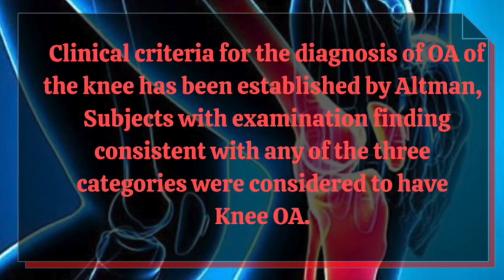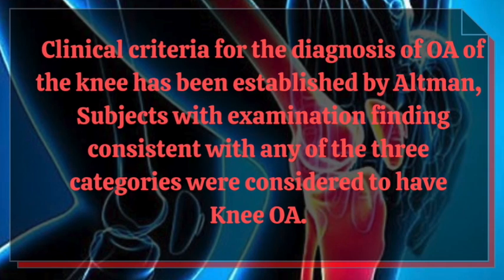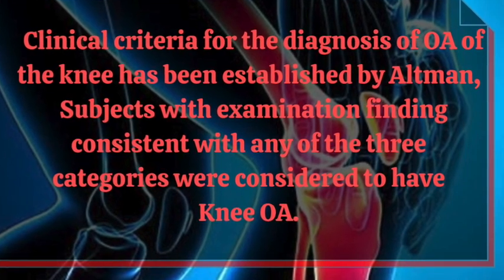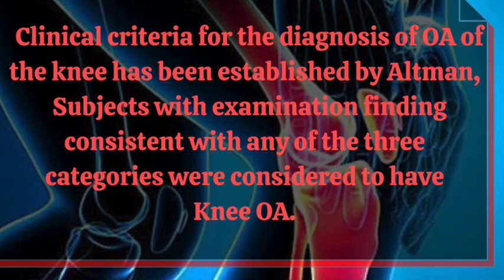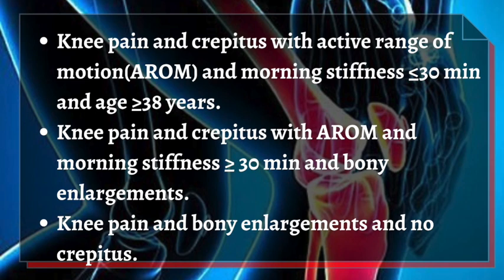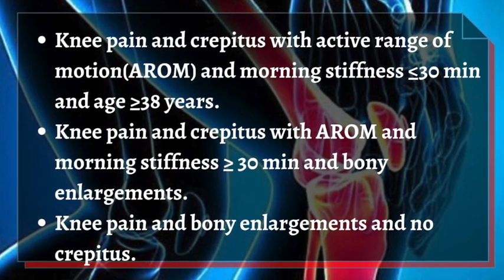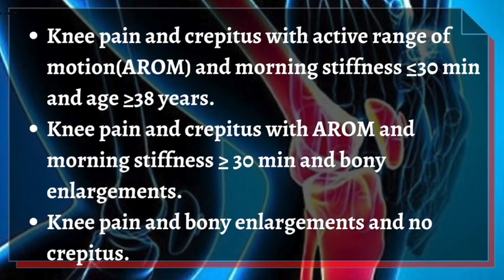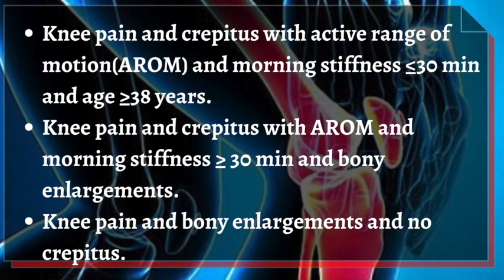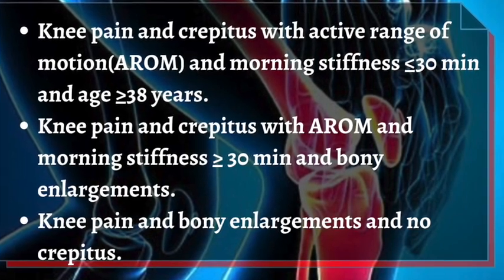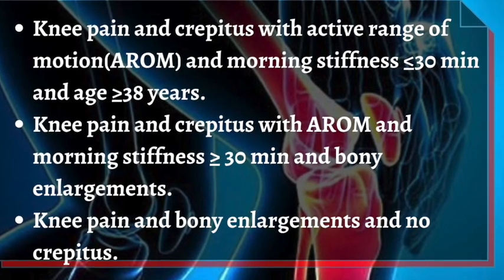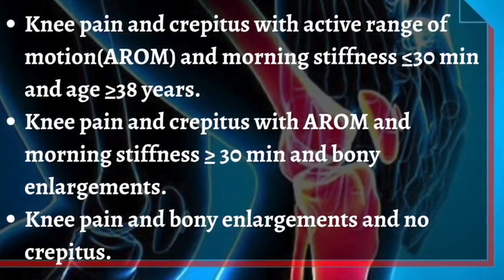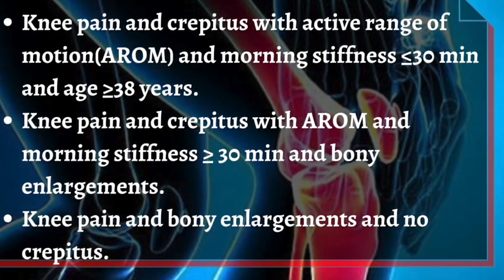Clinical criteria for diagnosis of osteoarthritis of the knee have been established by Altman, in which subjects with findings consistent with any of three categories are considered to have knee osteoarthritis. Category one: knee pain and crepitus with active ROM, morning stiffness ≤30 minutes, and age ≥38 years. Category two: knee pain and crepitus with active ROM and knee stiffness ≥30 minutes and bony enlargement. Category three: knee pain and bony enlargement with no crepitus.